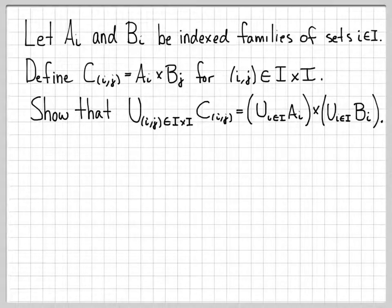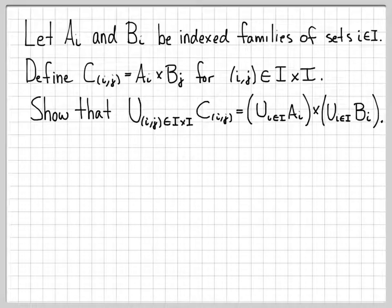Intuitively, this kind of makes sense. It says that I can either union over all a sub i and then union over all b sub i and then take that cross product, or I can take the cross products individually — a sub i cross with b sub j — and union all those sets. It's just a matter of where we take the union, and it seems like these should be the same. We're going to actually show that they are.